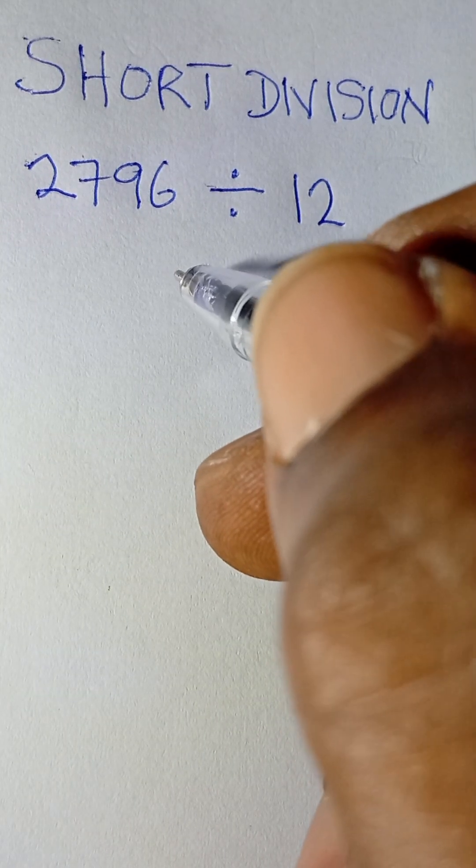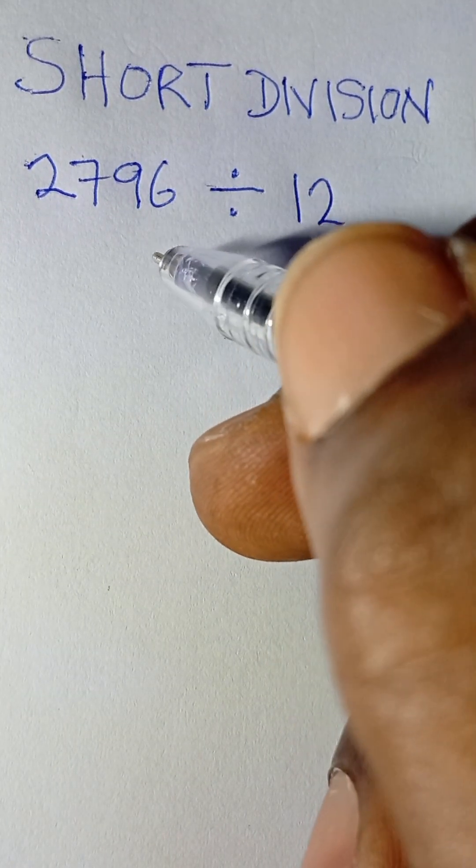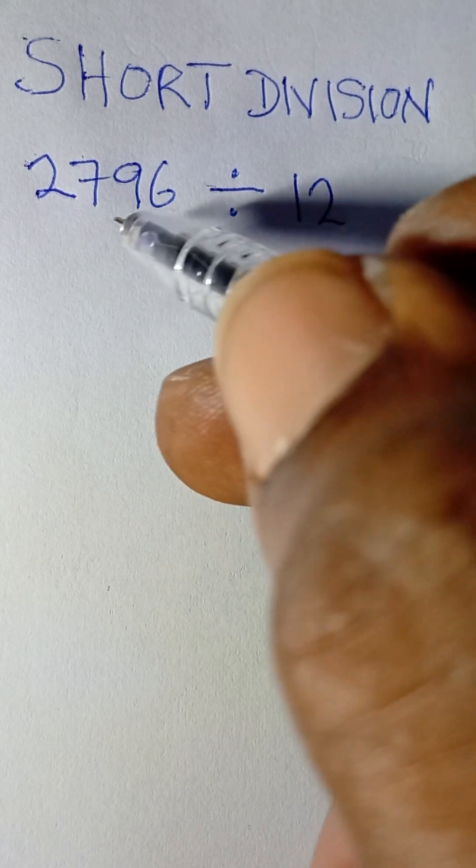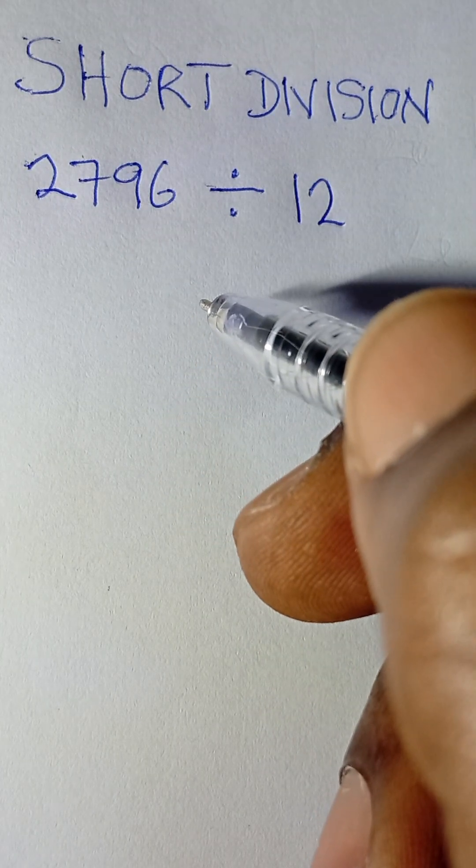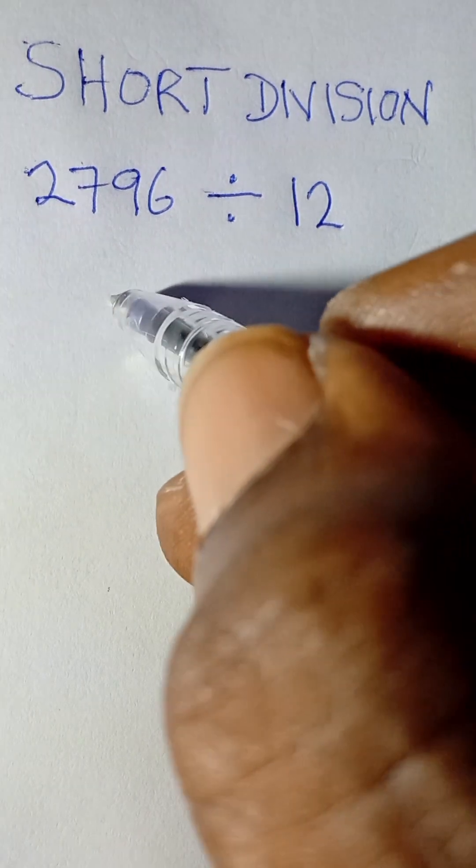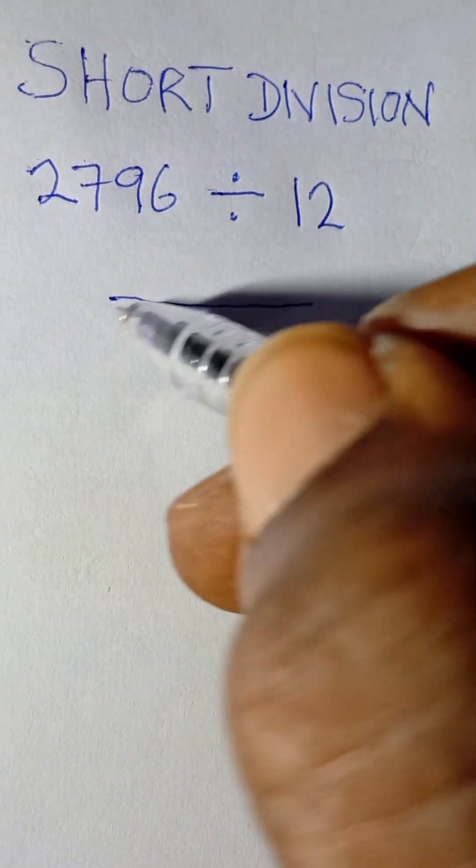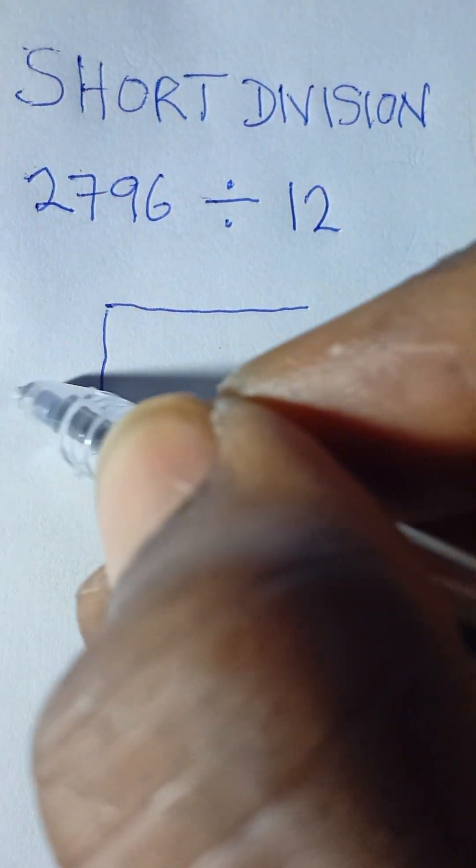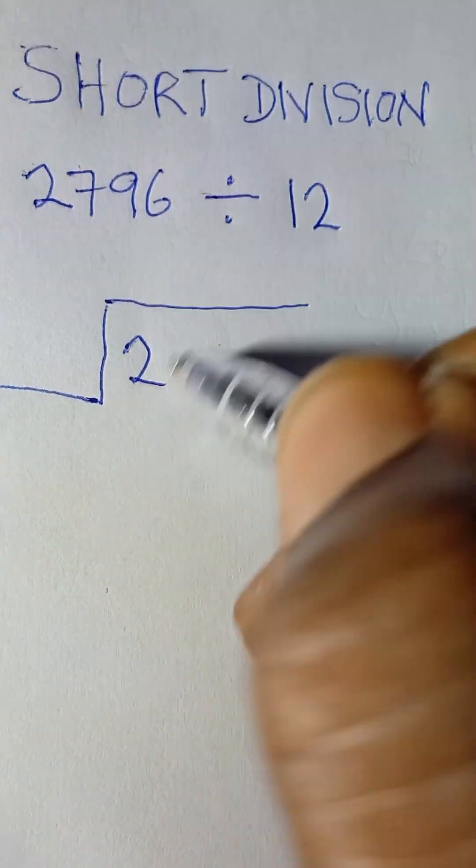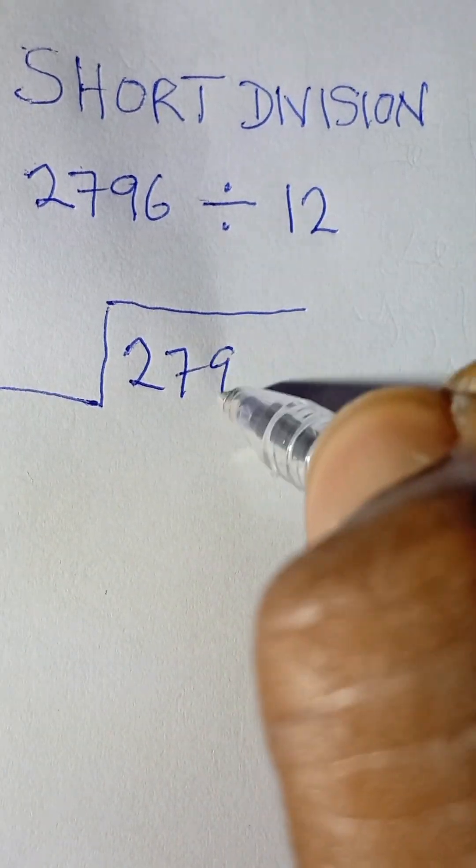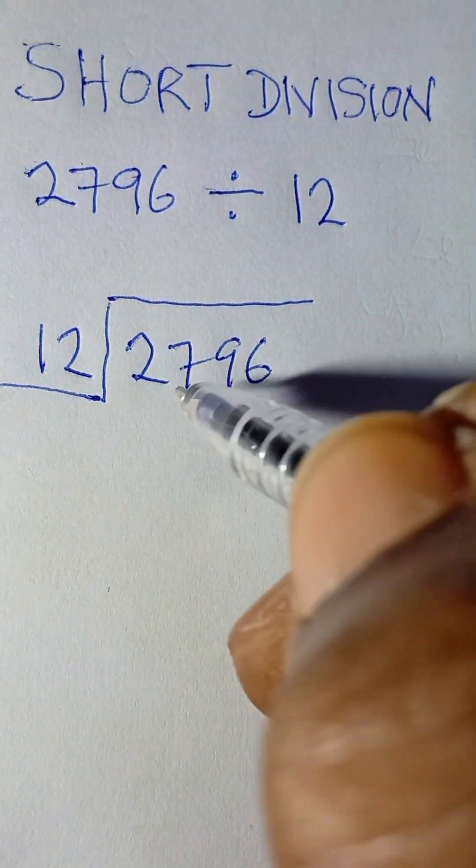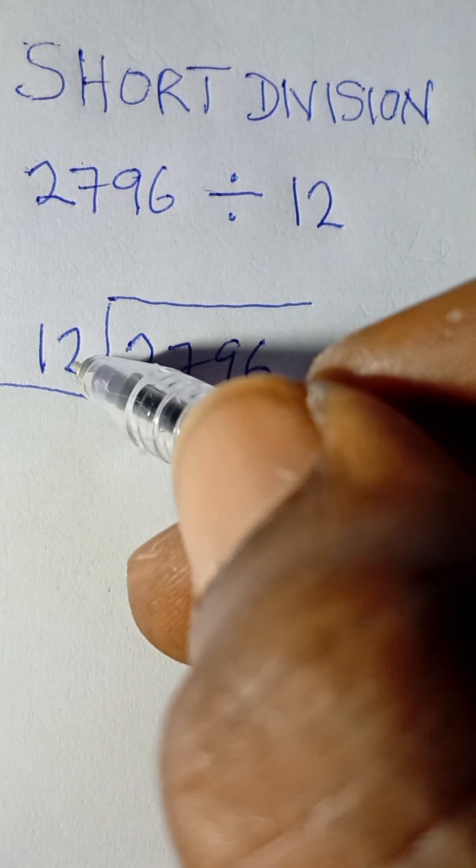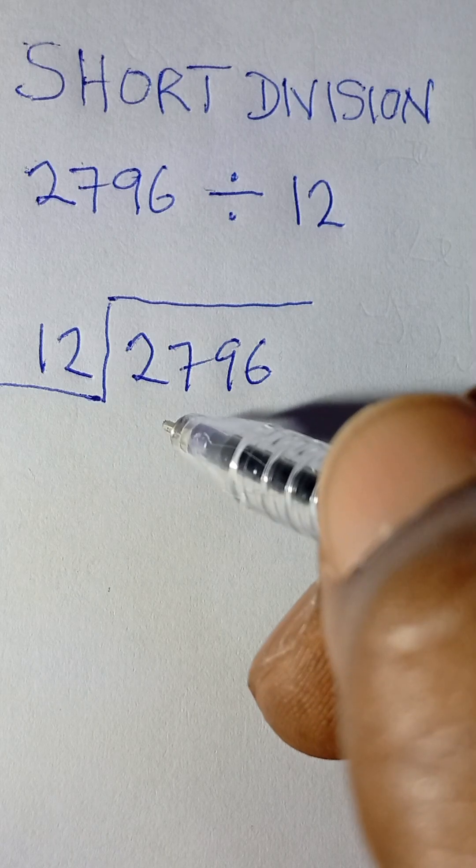All right, we'll be looking at short division, which is actually shorter and faster than long division. The question here says 2796 divided by 12. What you're going to do is put that value in a box: 2796 divided by 12 outside. So we'll say 27 divided by 12, that will...